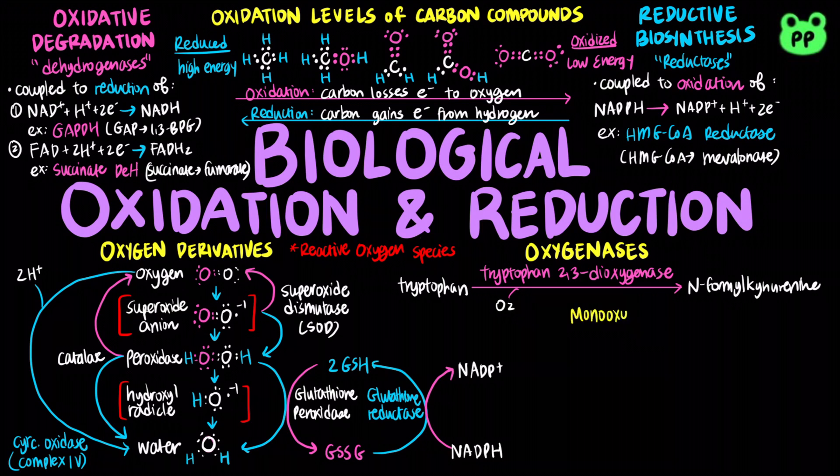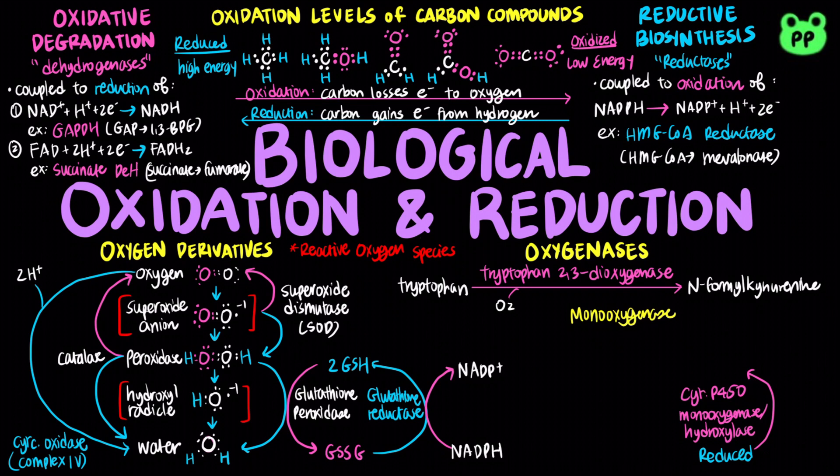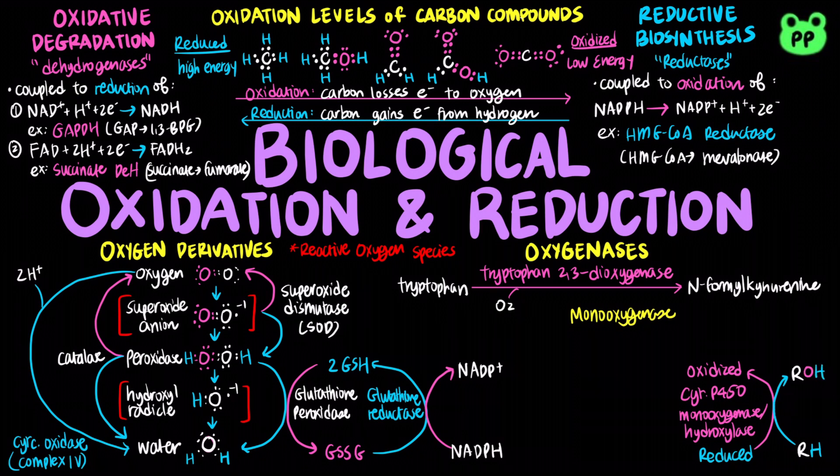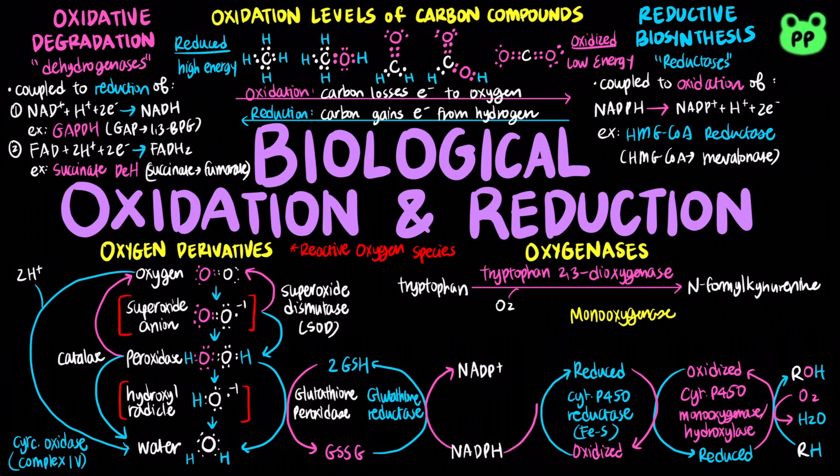On the other hand, monooxygenases catalyze reactions in which only one of the two oxygen atoms is incorporated into the organic product. An example would be cytochrome P450, which hydroxylates an organic substrate by incorporating one oxygen atom of O2, and the other oxygen atom is reduced to water by coupling to the oxidation of iron-sulfur center of cytochrome P450 reductase. The iron-sulfur center is subsequently reduced by coupling to the oxidation of NADPH to NADP+.